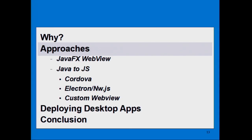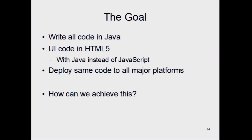Now I'll talk about different approaches you can use for writing your interface in HTML5 and deploying it. Just as a reminder, our goal is to write all our code in Java. We want our user interface code to be in HTML5, but this HTML5 code will use Java instead of JavaScript — so you don't actually have to code anything in JavaScript, but you're displaying it using HTML5. Then you want to deploy this code to all the major platforms.